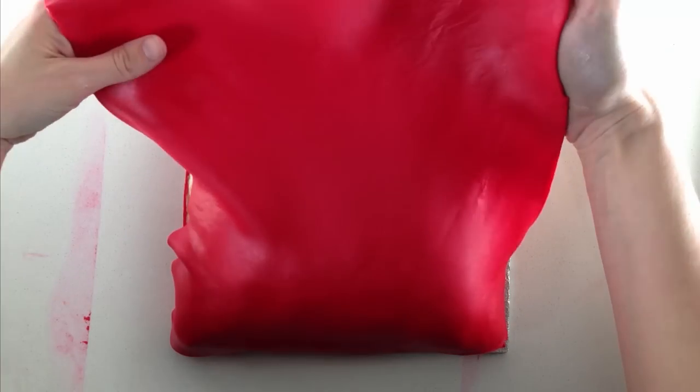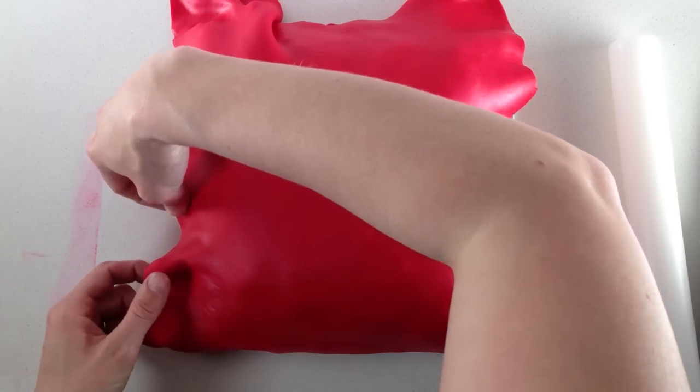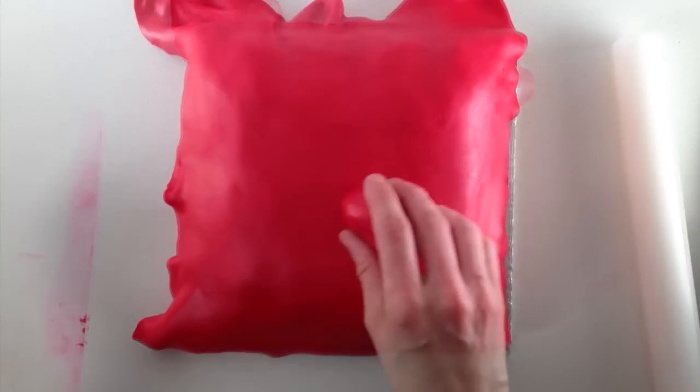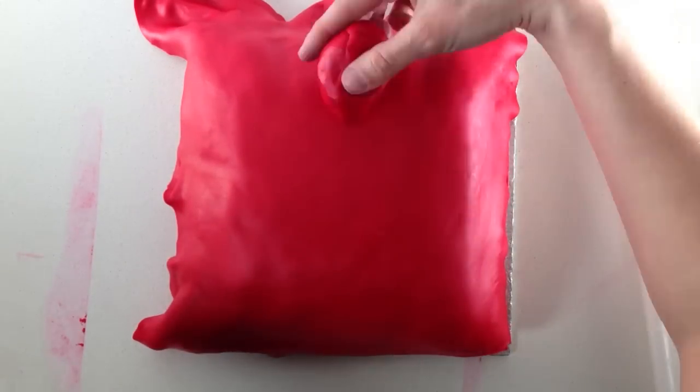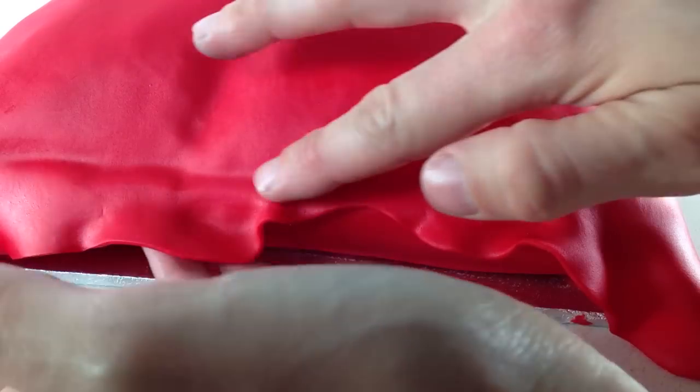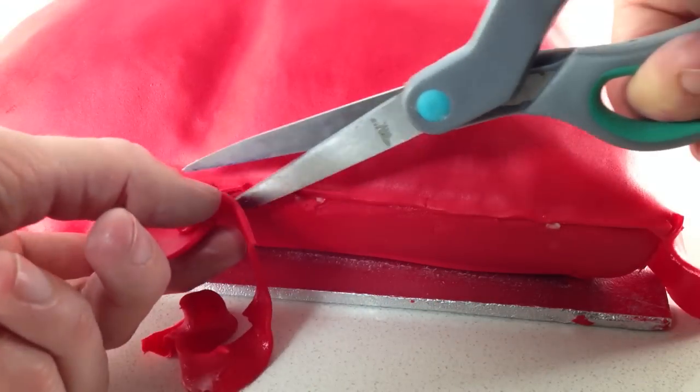You can use a contrasting color here, or you can rub it with a texture mat—you can use whatever you want to customize your pillow. Then use a ball of fondant to smooth out the fondant and push it into those creases that we made. Then run your finger along to find the edge of the bottom fondant and trim it up using scissors.